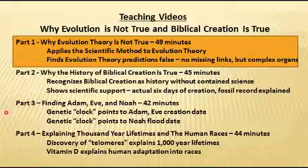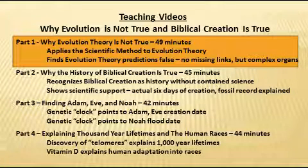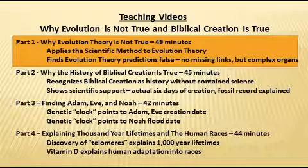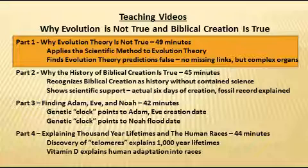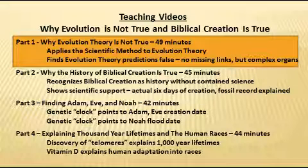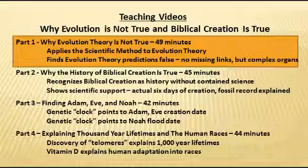We'll find a clock of when they existed, and in part four we'll look at the phenomenon of thousand-year lifetimes and the development of human races. I add parts three and four to give additional proof that there is a scientific backing for the historical account we call biblical creation. So let's move on to part one — why evolution is not true.